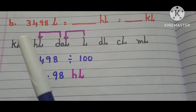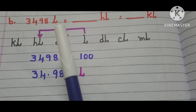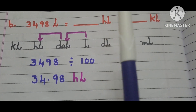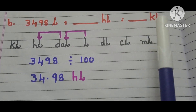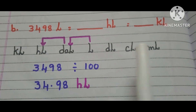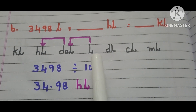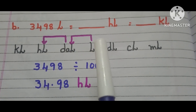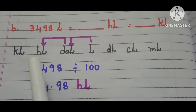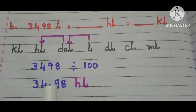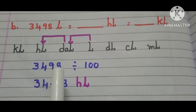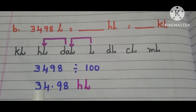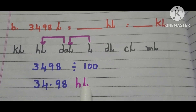Part B: 3498 liters is equals to how many hectoliters? And that is equals to how many kiloliters? Here we have the table. Where are the liters in the table? Here it is. Where are hectoliters? Here it is. So, we have to move from right side to left side 2 steps. So, we have to divide 3498 with 100. Then it becomes 34.98 hectoliters.